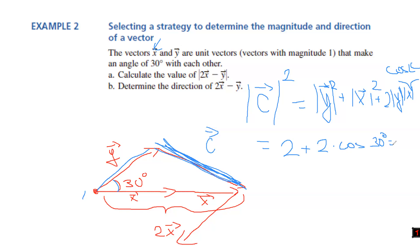Cosine of 30 degrees is square root of 3 over 2. At school we were given special triangles to memorize these values. Sine of 30 degrees is 1 over 2, and cosine of 30 degrees is square root of 3 over 2. You need to remember these ratios by heart.